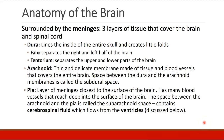Now let's review some anatomy of the brain. The brain is surrounded by the meninges, three layers of tissue that cover the brain and the spinal cord. The first layer is called the dura, which lines the inside of the entire skull and creates folds — the falx, which separates the right and left half of the brain, and the tentorium, which separates the upper and lower parts. The second layer is the arachnoid, a thin and delicate membrane. The space between the dura and arachnoid is the subdural space. The third layer is the pia, closest to the brain surface, with many blood vessels. The space between the arachnoid and pia is the subarachnoid space, which contains the cerebrospinal fluid flowing from the ventricles.